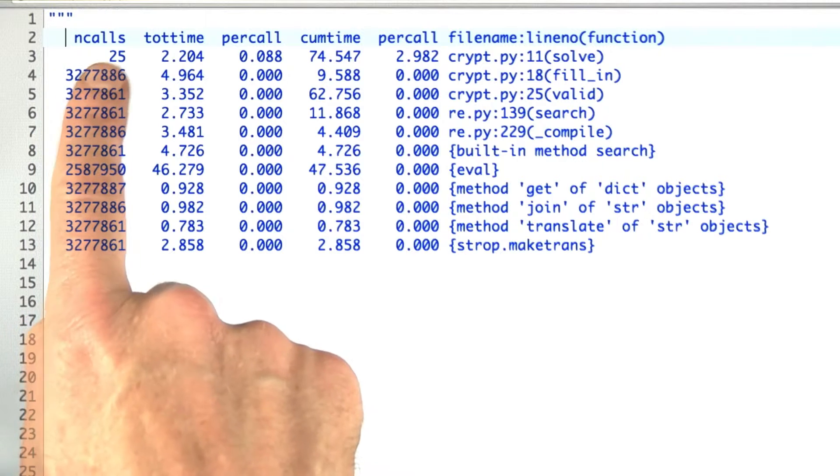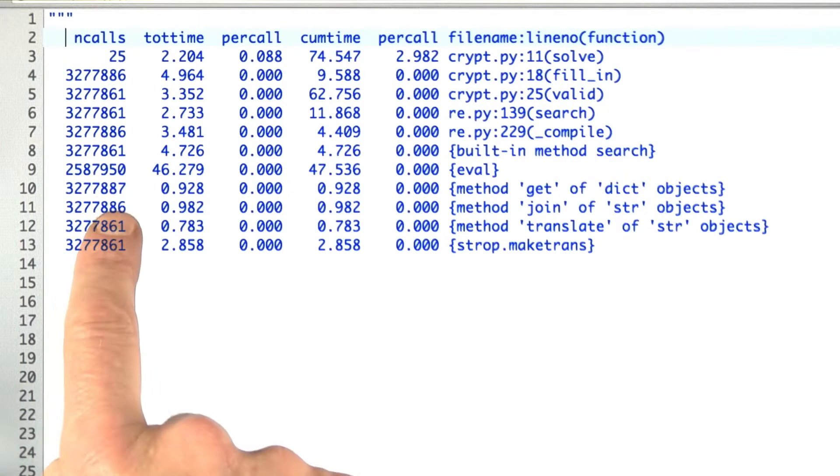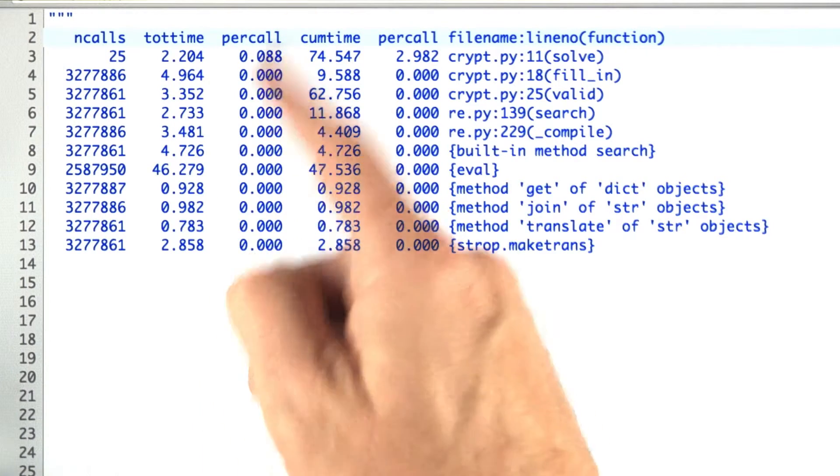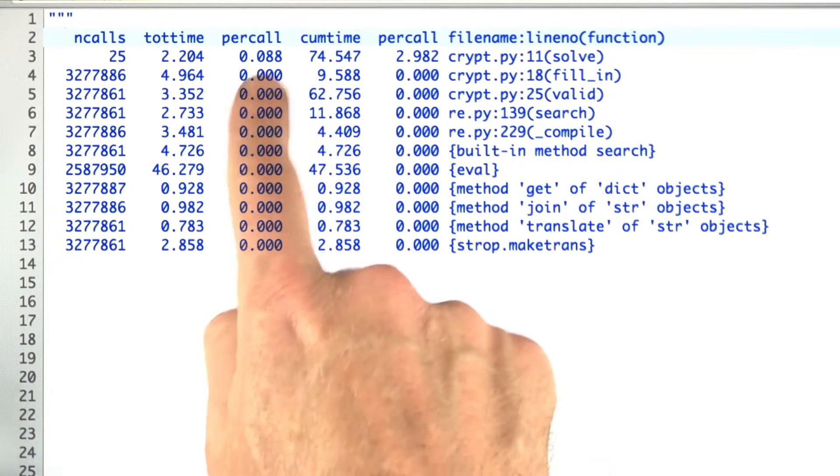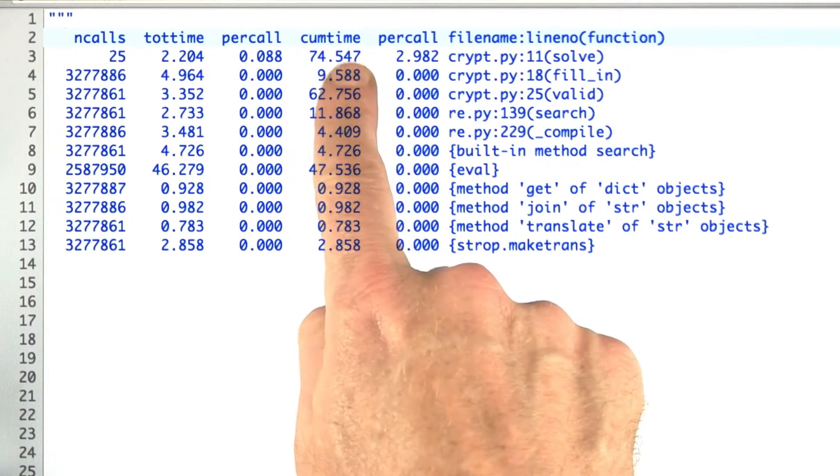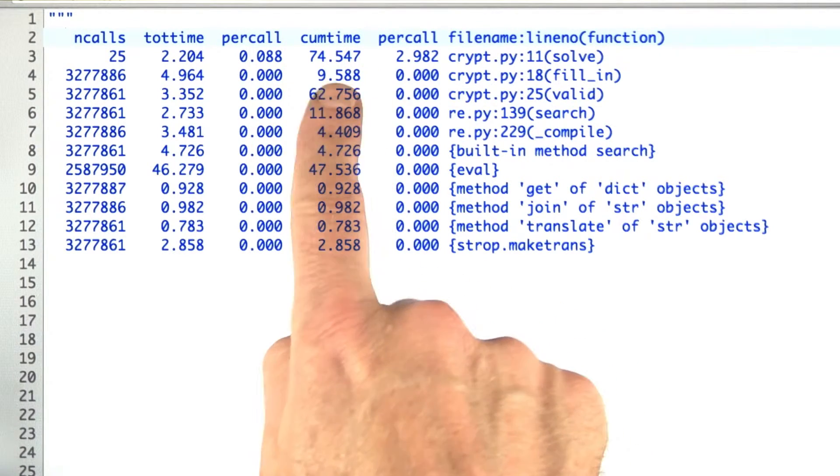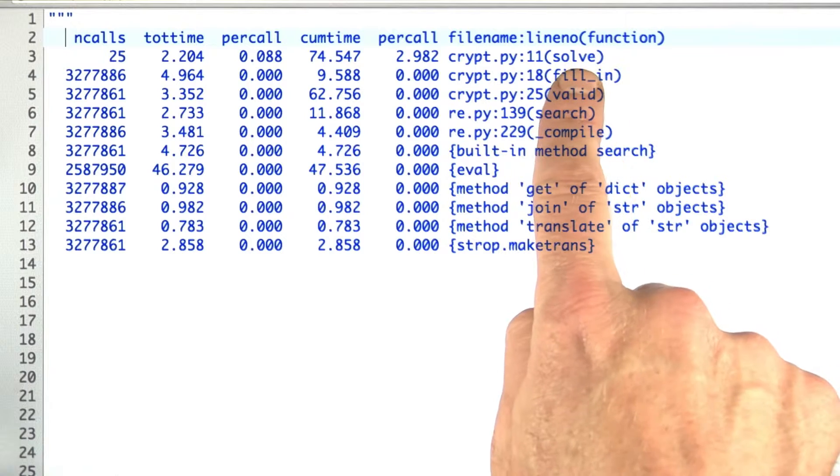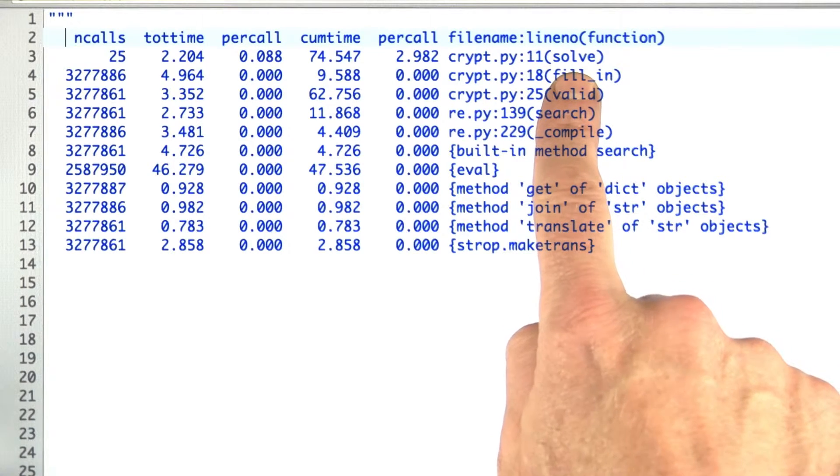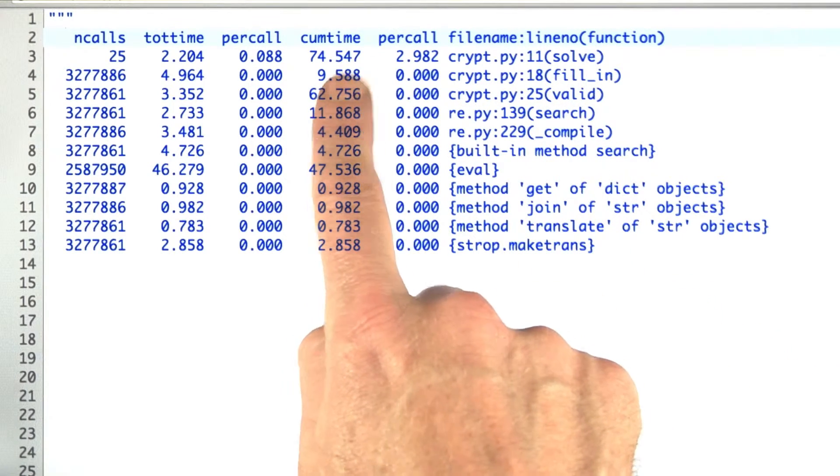These other columns tell us the number of times each of these functions was called, the total time spent, some percentage, we won't worry about that, that's time per call. Then the cumulative time, the total number of times spent there, so mostly I was just calling solve, that was about 75 seconds,